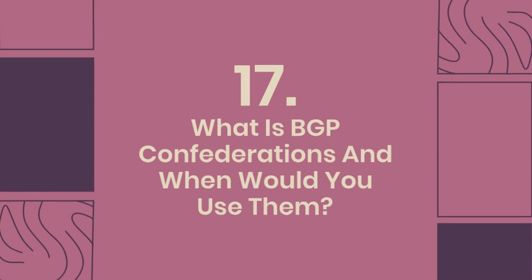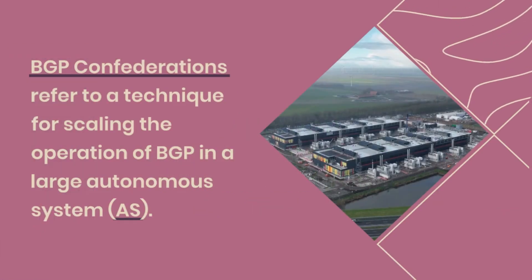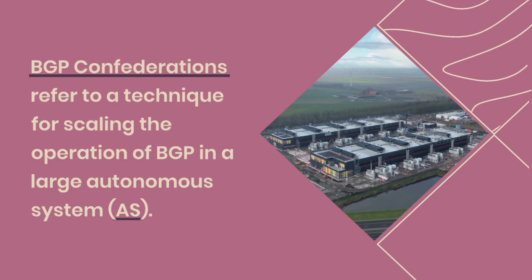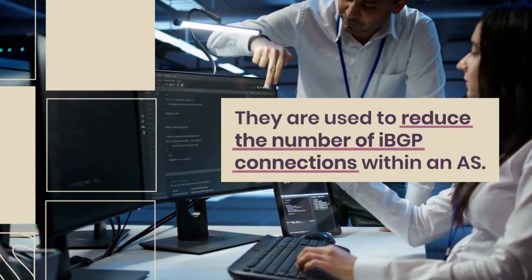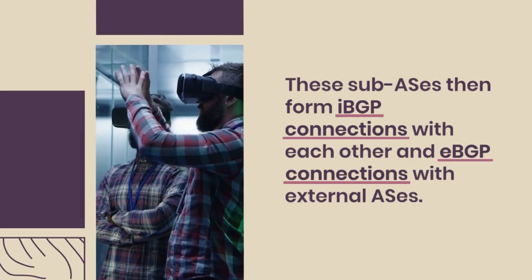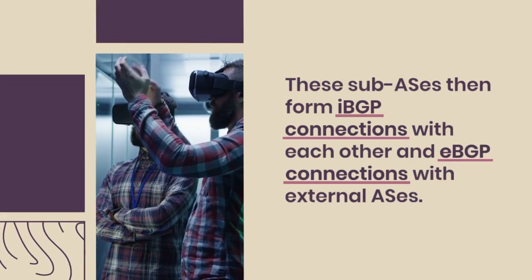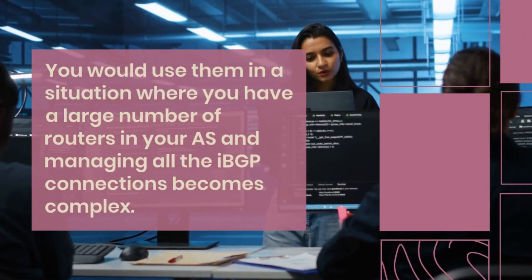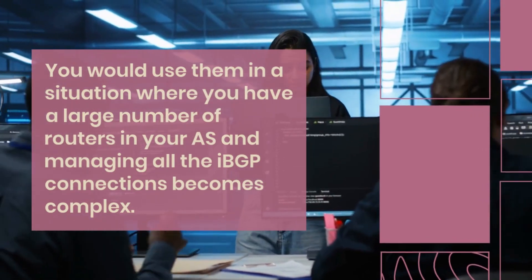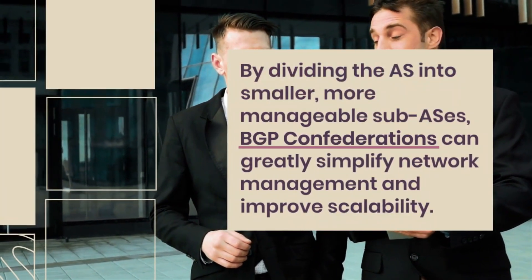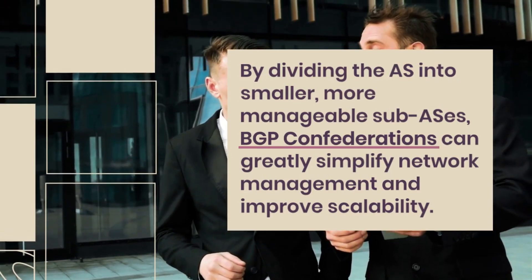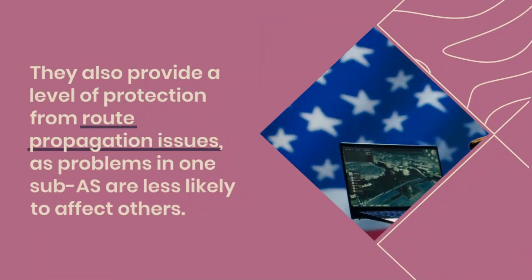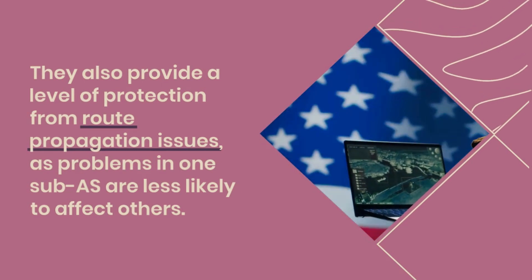What is BGP Confederations and when would you use them? BGP Confederations are a technique for scaling BGP in a large autonomous system, used to reduce the number of IBGP connections within an AS. With BGP Confederations, the AS is divided into several smaller internal sub-ASs, each with its own identifier. These sub-ASs form IBGP connections with each other and EBGP connections with external ASs. You would use them when a large number of routers makes managing all IBGP connections complex. Confederations simplify network management, improve scalability, and provide protection from route propagation issues.